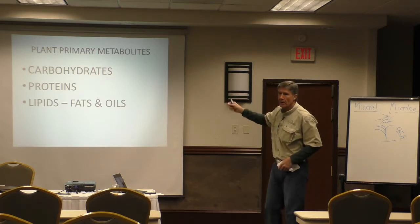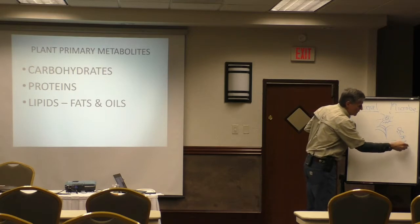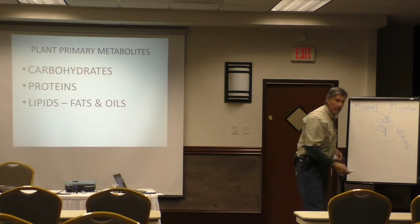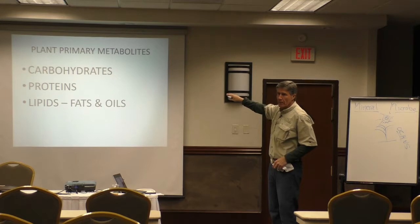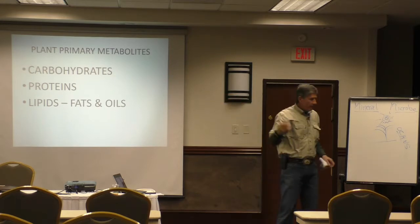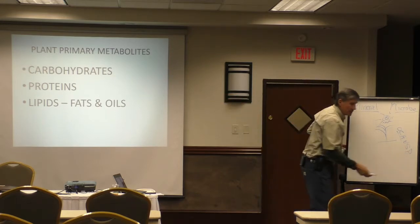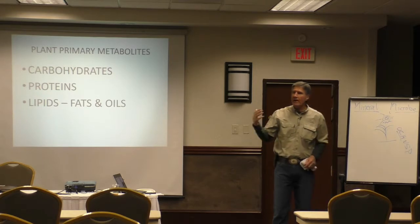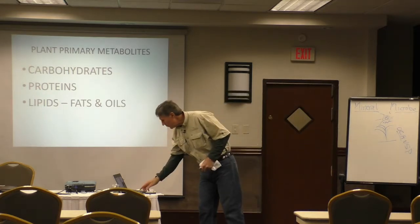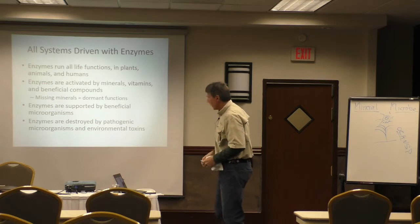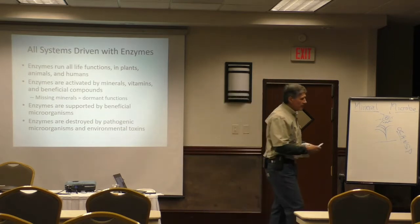So the very first thing a plant does is put carbohydrates together. When we start adding nitrogen and sulfur to the equation, we start getting proteins. And if we've got enough energy, we can bring in some phosphate and start producing fats and oils.